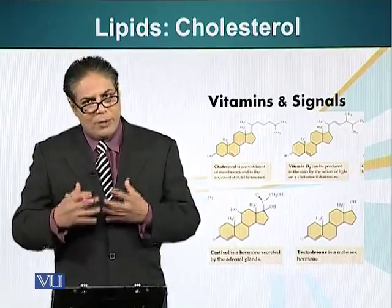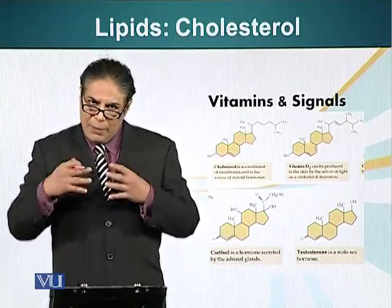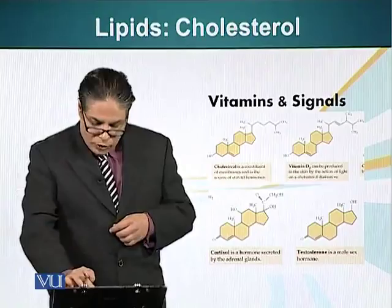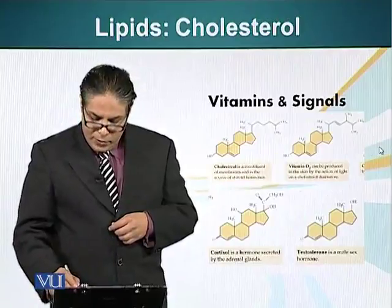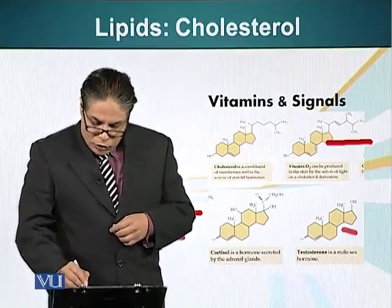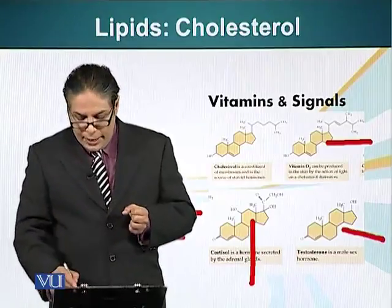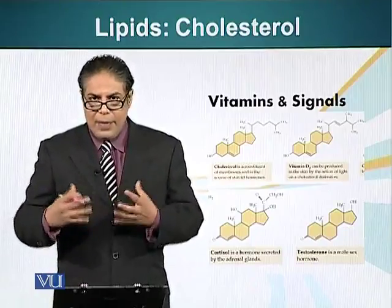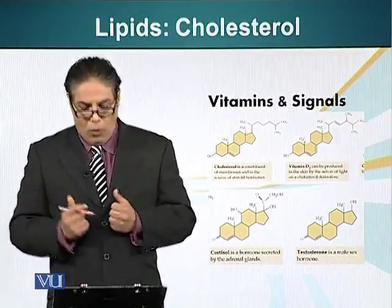It is important that the plasma membrane stays fluid because we want to move different molecules in the plasma membrane — it is important for its functioning. The derivatives of cholesterol are also very important. For example, vitamin D is an important molecule that we require. Testosterone is also very important. These are important signaling molecules present in different organisms, and they play an important role in the overall functioning of the cell and groups of cells which form the organism.